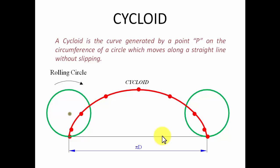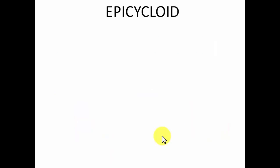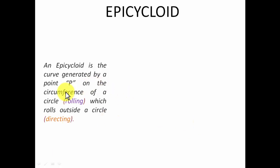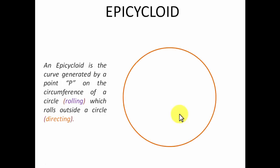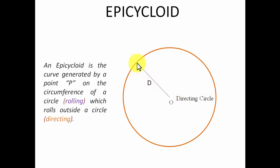Now let's move forward and deal with what you call an epicycloid. This is the curve generated by a point P on the circumference of a circle which rolls outside a circle. There are two circles in this case — one is the circle which is rolling, and the other is the directing circle which is fixed. The directing circle has a diameter D (capital), and the rolling circle placed outside it has a diameter d (small).